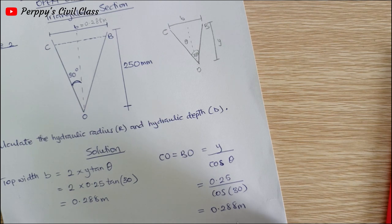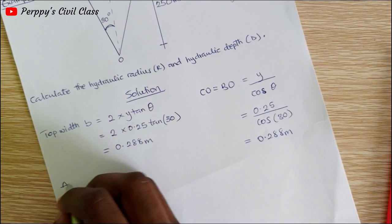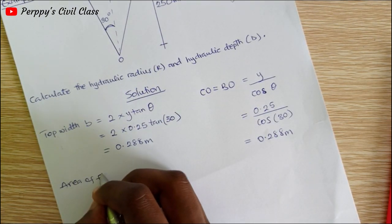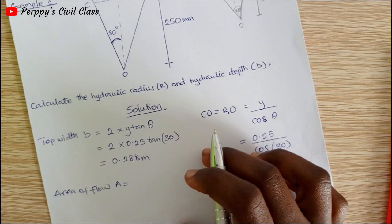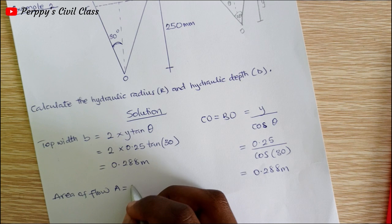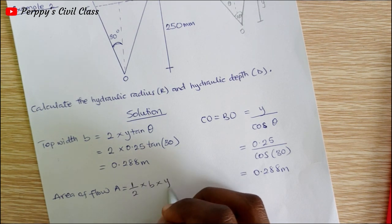Now we can calculate for our area of flow. Area of a triangle is given as half times b times y.